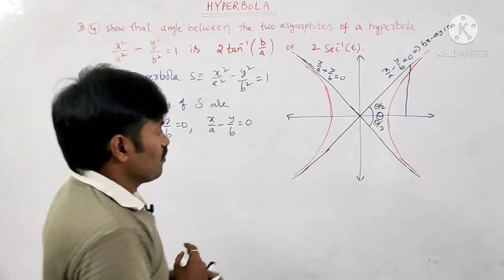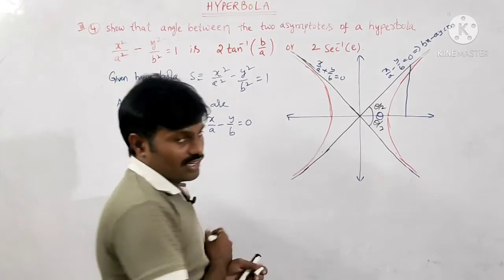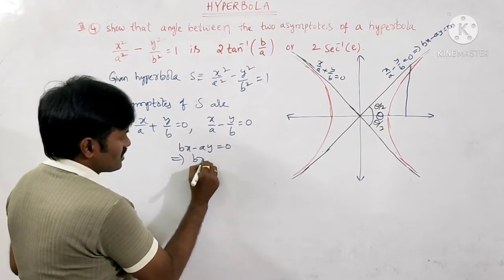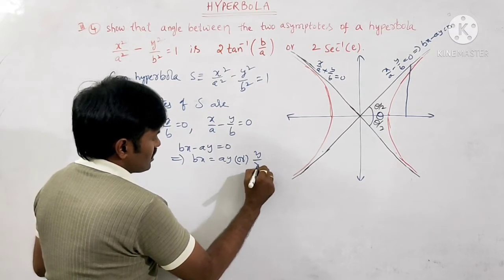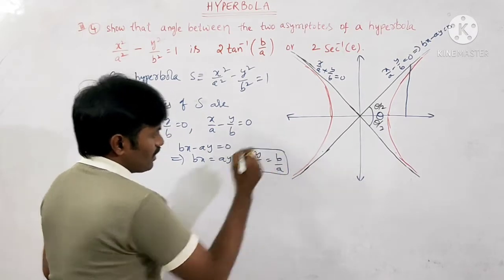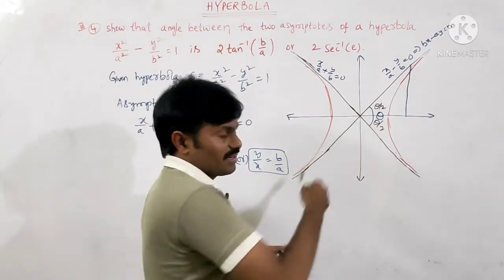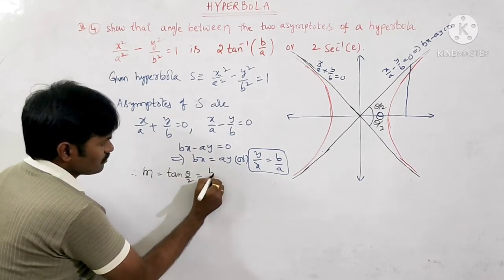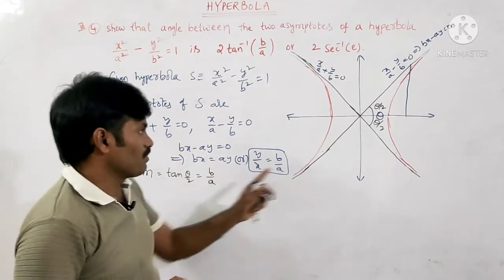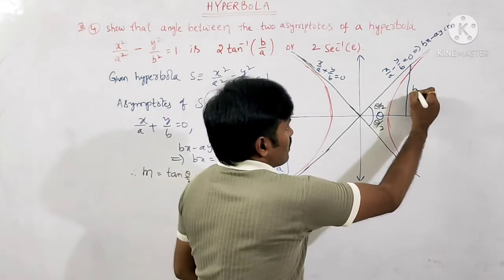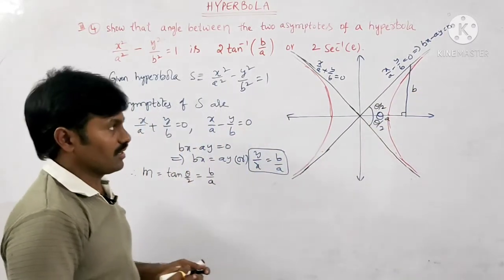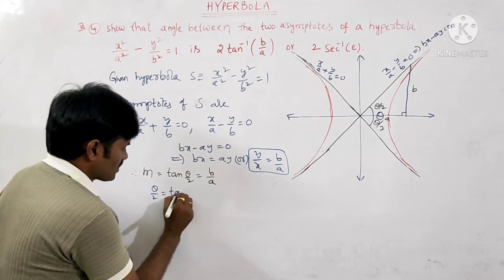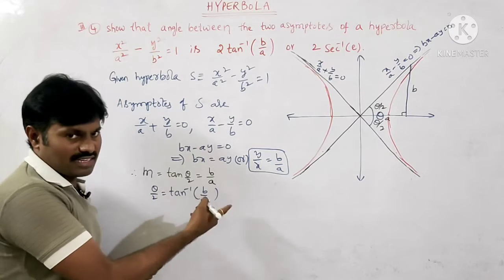From bx − ay = 0, we get bx = ay, so y/x = b/a. Since y/x represents the slope, we have slope m = tan(θ/2) = b/a. Here b is the perpendicular height and a is the base, forming the right triangle in our figure.